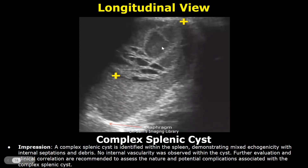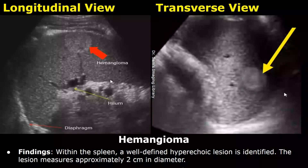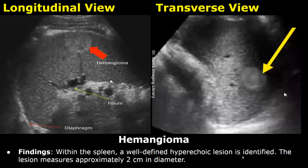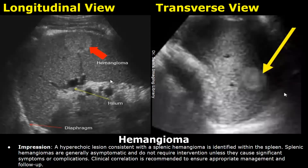Here is a report of hemangioma. In the findings, a well-defined hyperechoic lesion is identified and then the size of the lesion is written. In the impression, you can mention the hyperechoic lesion, and you can end the impression by writing about clinical correlation.